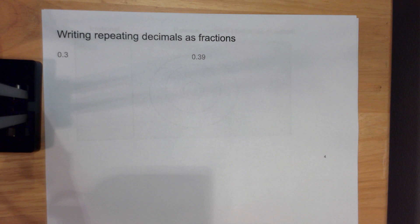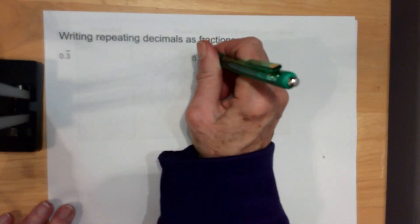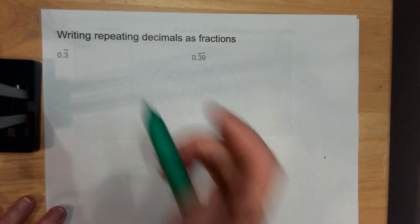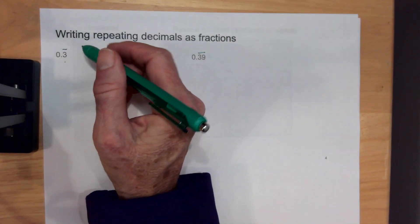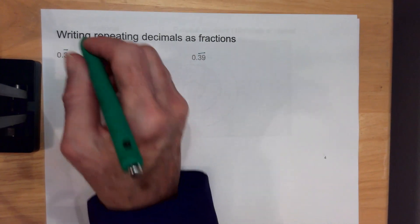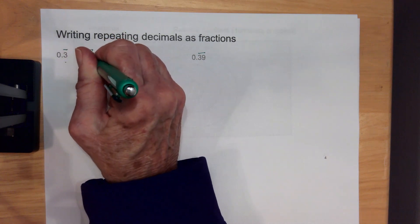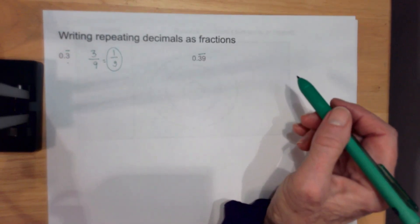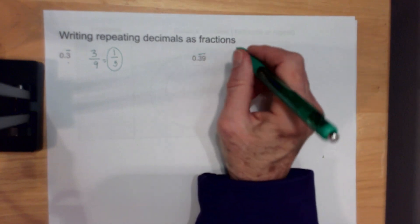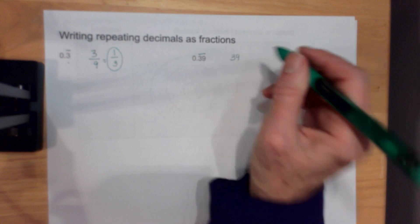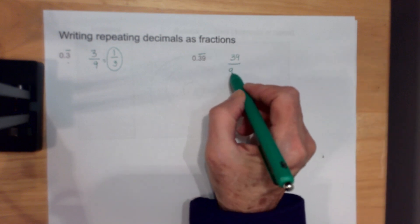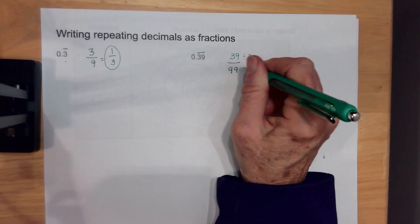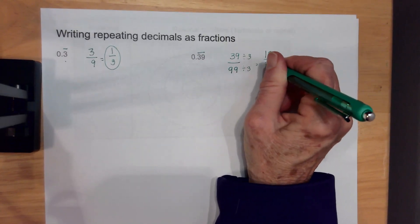These are repeating decimals. They have a line over top of them. Anytime you have a repeating decimal and want to make it into a fraction, instead of placing it over 10, you subtract 1 from the place value. So you place the 3 over 9 and reduce that to 1 third. So 1 third is the same as 0.3 repeating. Same thing with a line over the 3 and the 9 — take 33 and place it over 99. I can divide the top and the bottom by 3, giving me 13 over 33.